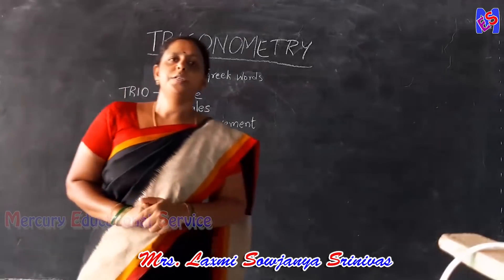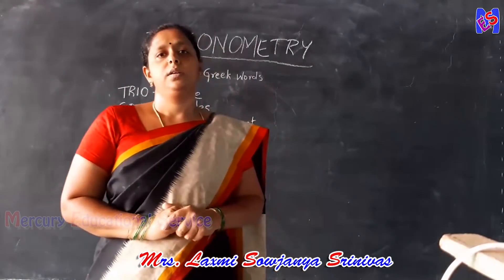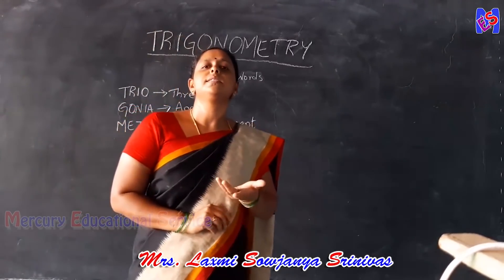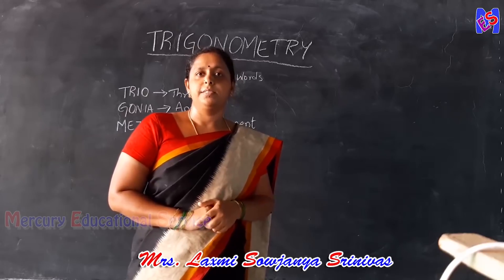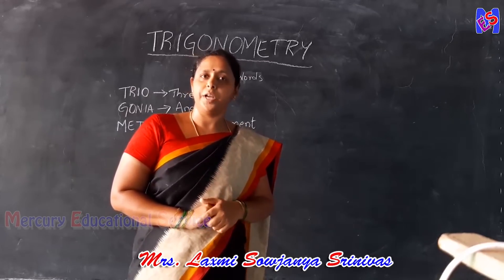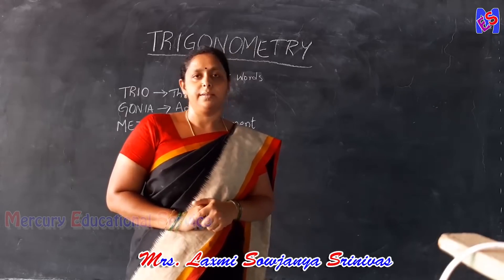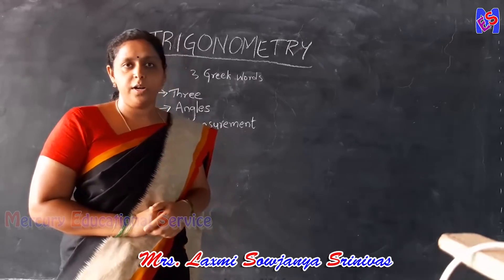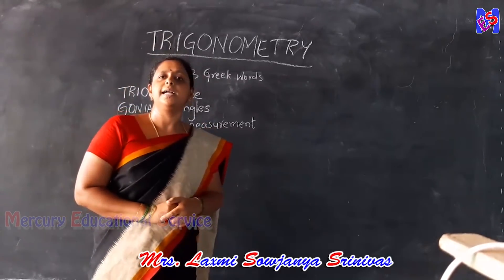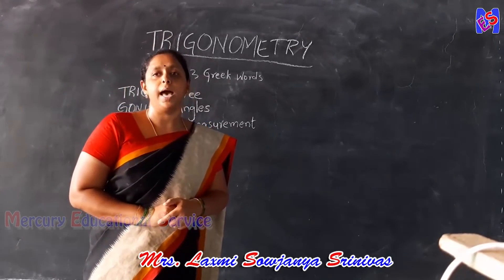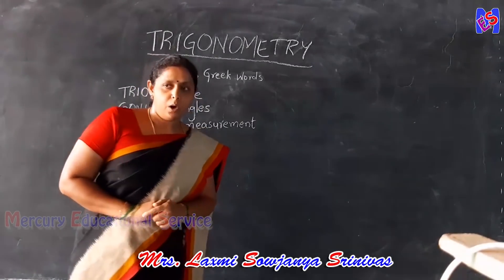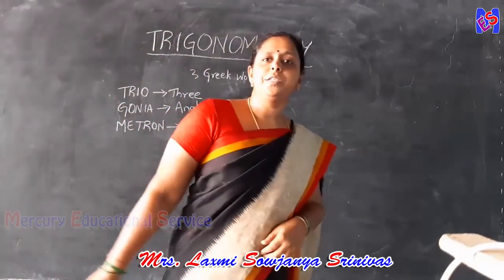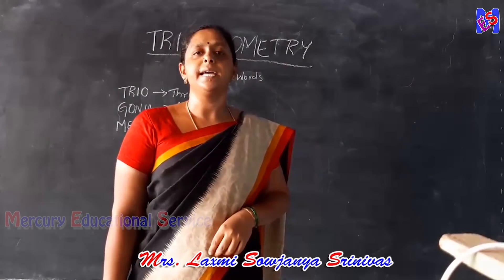This Trigonometry unit discusses the relation between angles and the sides of a triangle. We know that there are three types of triangles according to angles: one, acute angle triangle; second, right angle triangle; and third, obtuse angle triangle. In Trigonometry, we take the right angle triangle.